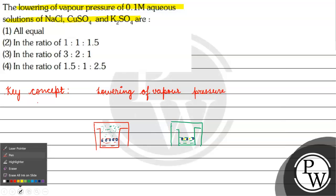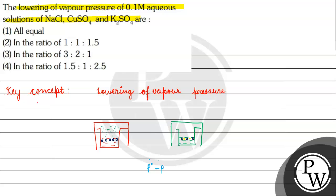P0 minus P divided by P0, where P0 is the vapor pressure of pure solvent and P is the vapor pressure of solution, gives us the relative lowering of vapor pressure, which equals i (the van't Hoff factor) times the mole fraction of the non-volatile solute.